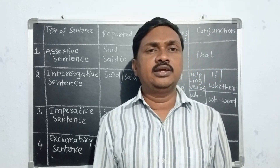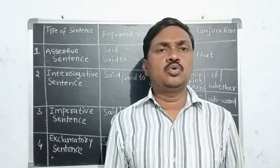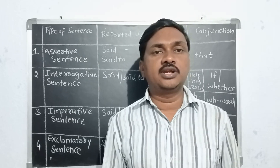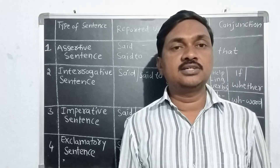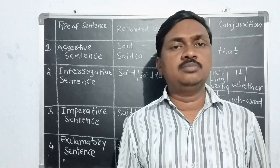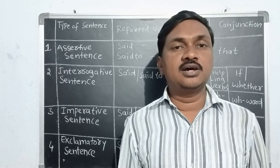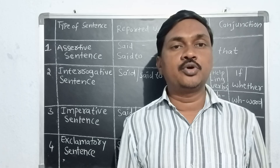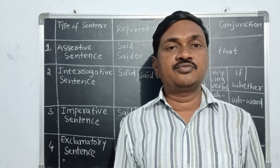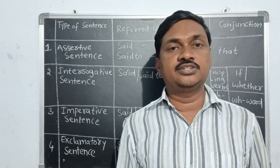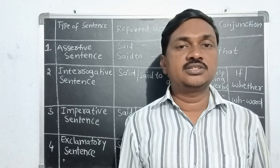Generally, in a direct speech statement there are two clauses: main clause and subordinate clause. The verb which is in the main clause is the reported verb. The subordinate clause always depends upon the main clause, especially the reported verb. If the reported verb is in present tense or future tense, the tense of the subordinate clause will not change.